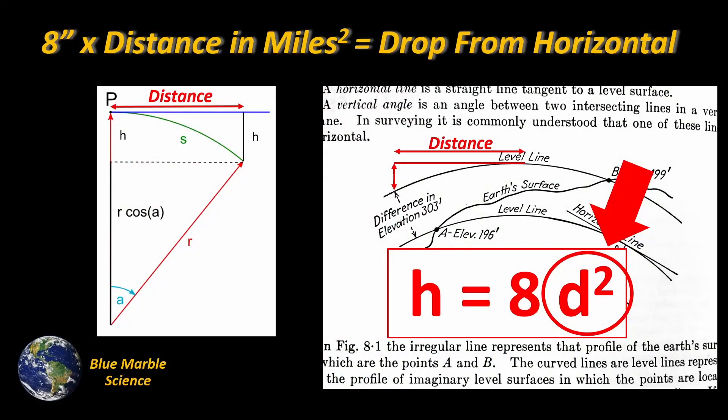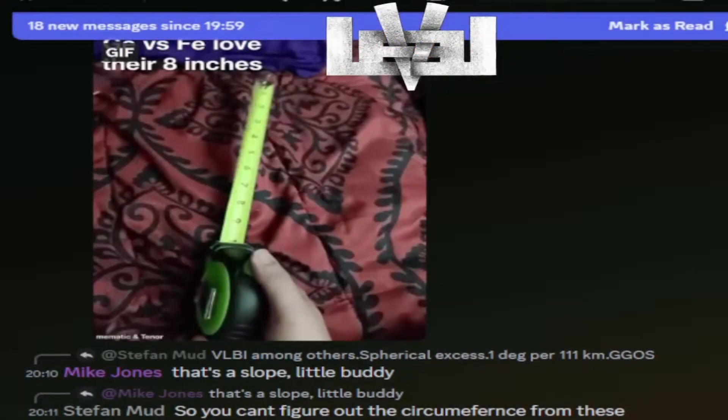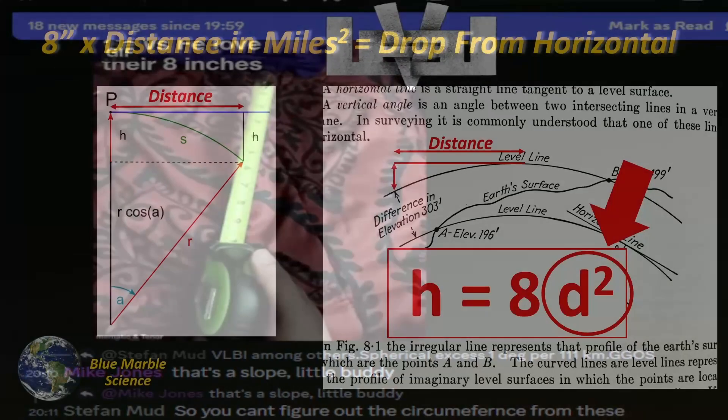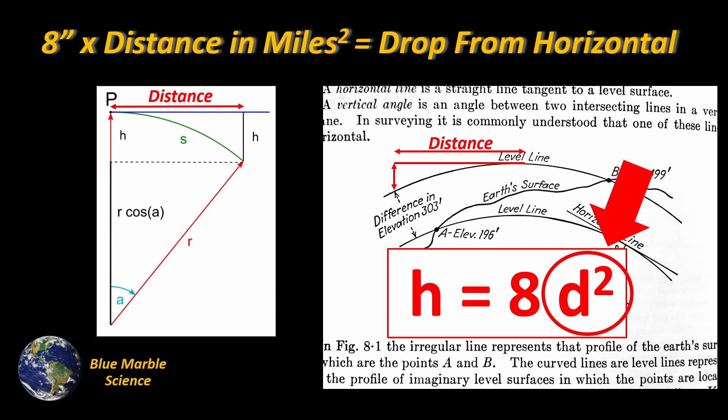Hold on there. Distance is a variable. It could be a mile, but it could also be a fraction of a mile, two miles, 10 miles, or a hundred miles. The amount of drop is going to vary depending on what the distance is. It's not just a mile — it can be anything you need it to be. That's only true if the distance is exactly a mile. If you have a different distance, you've got a different drop.